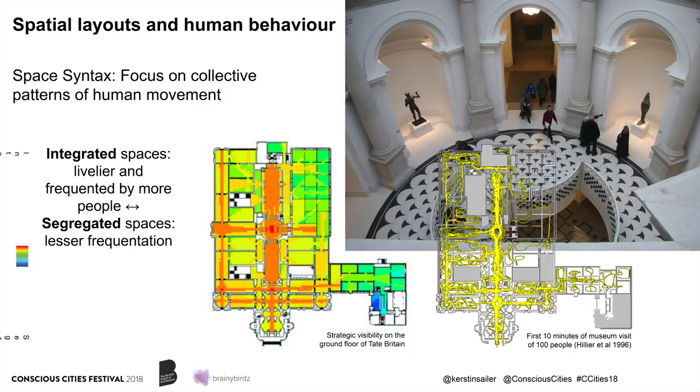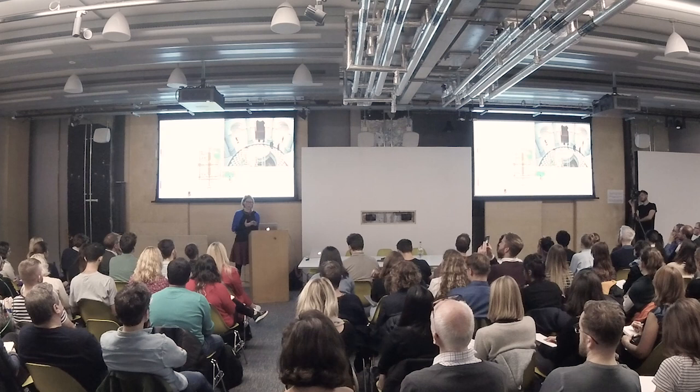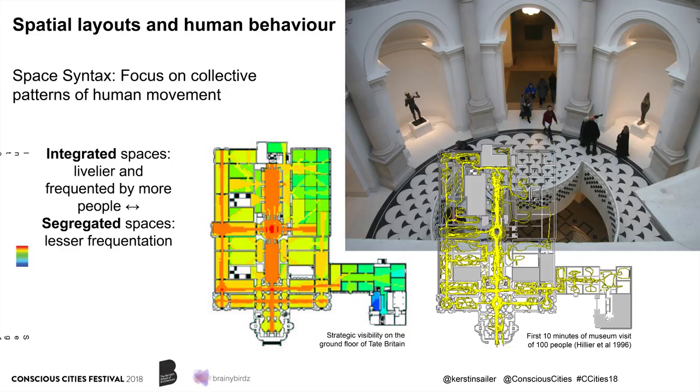What you can see on the left-hand side is a visibility graph showing visibility relations. This is a case study done in the 1990s by Bill Hillier and colleagues, which shows the Tate Britain. Then you can see this movement flow picture, which is the first ten minutes of a hundred random people — how and where they walk through the Tate Britain. You can see they overlap. The space syntax visibility notion predicts to a great degree where people go.